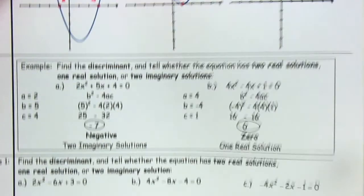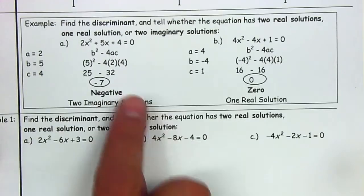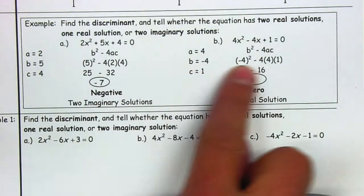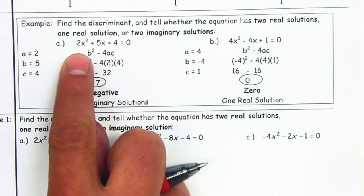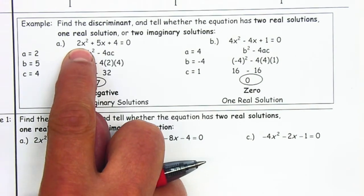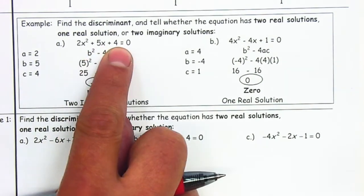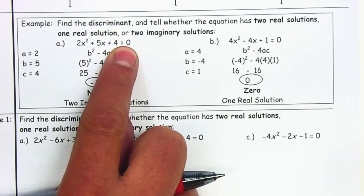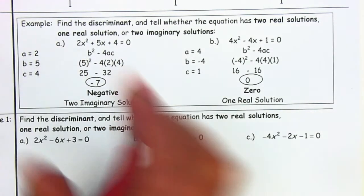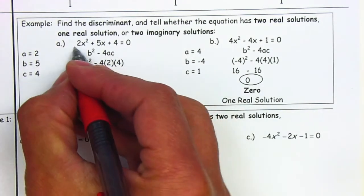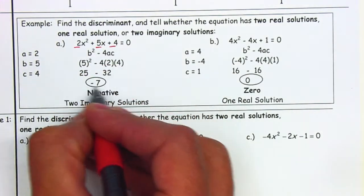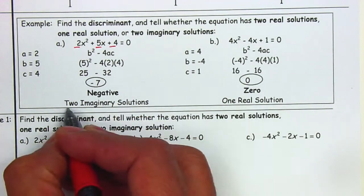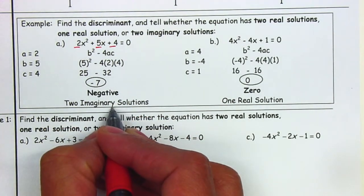Let's look at example number one. I have two examples here. For 2x squared plus 5x plus 4 equals 0, we identify A, B, and C, and basically just plug them in. Once we simplify, if it's negative, we are going to have two imaginary solutions.